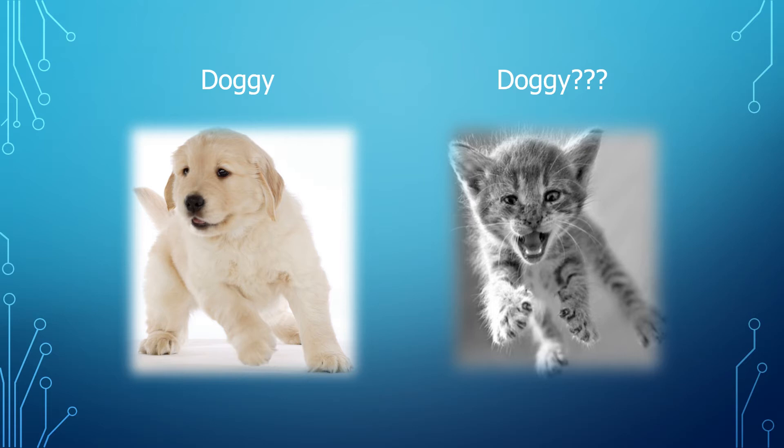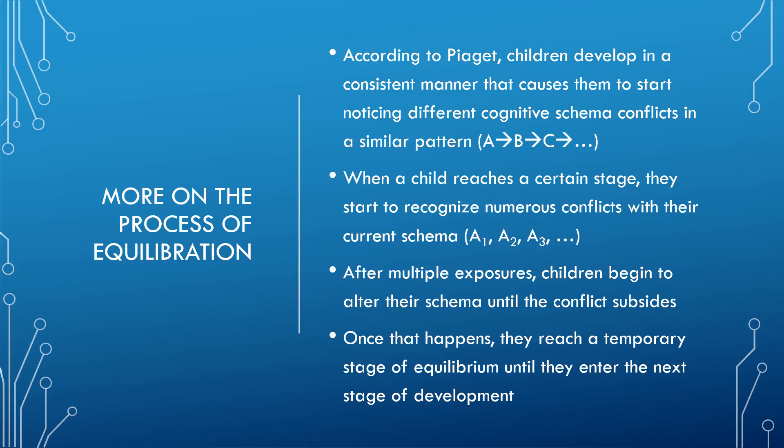Over time, as you accommodate and create maybe two different schemas — one for what's a dog and one for what's a cat — you can probably successfully identify one as one or the other the next time you see them. This puts you back in that state of mind called equilibrium. This is exactly what cognitive development was all about, according to Piaget.